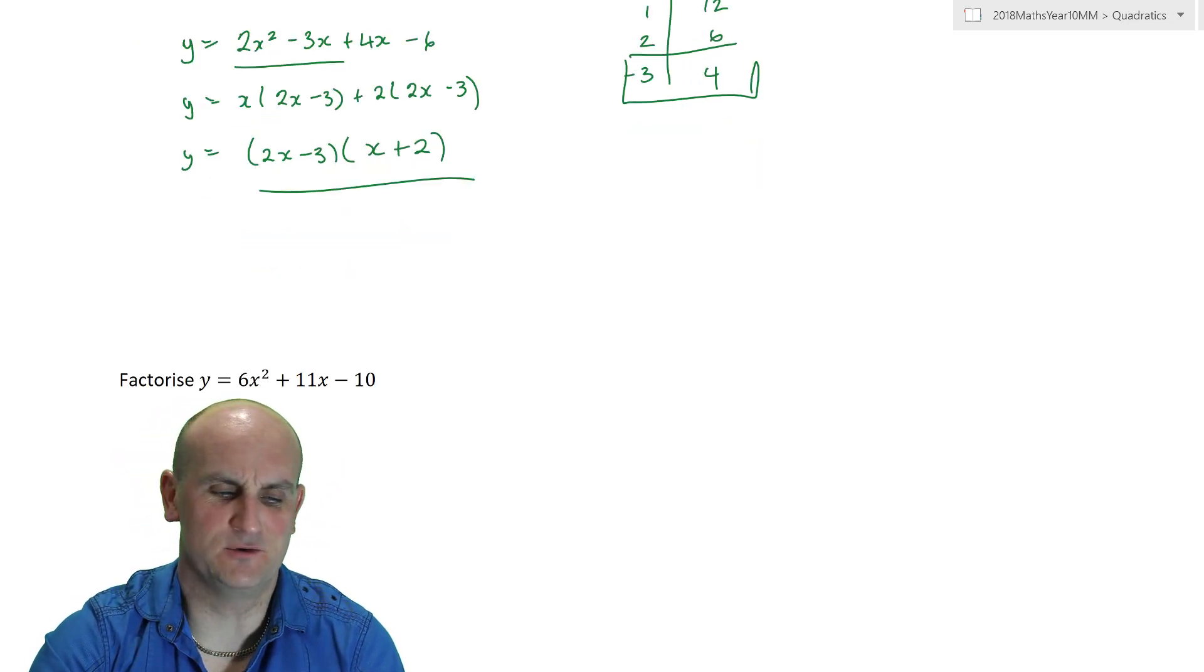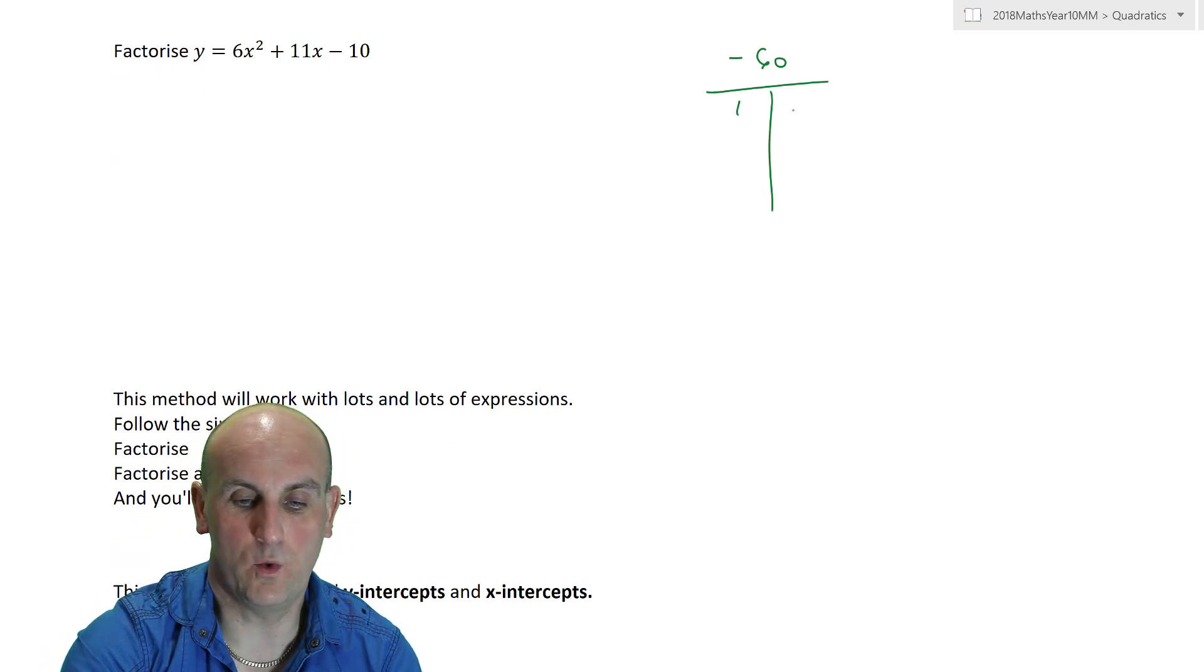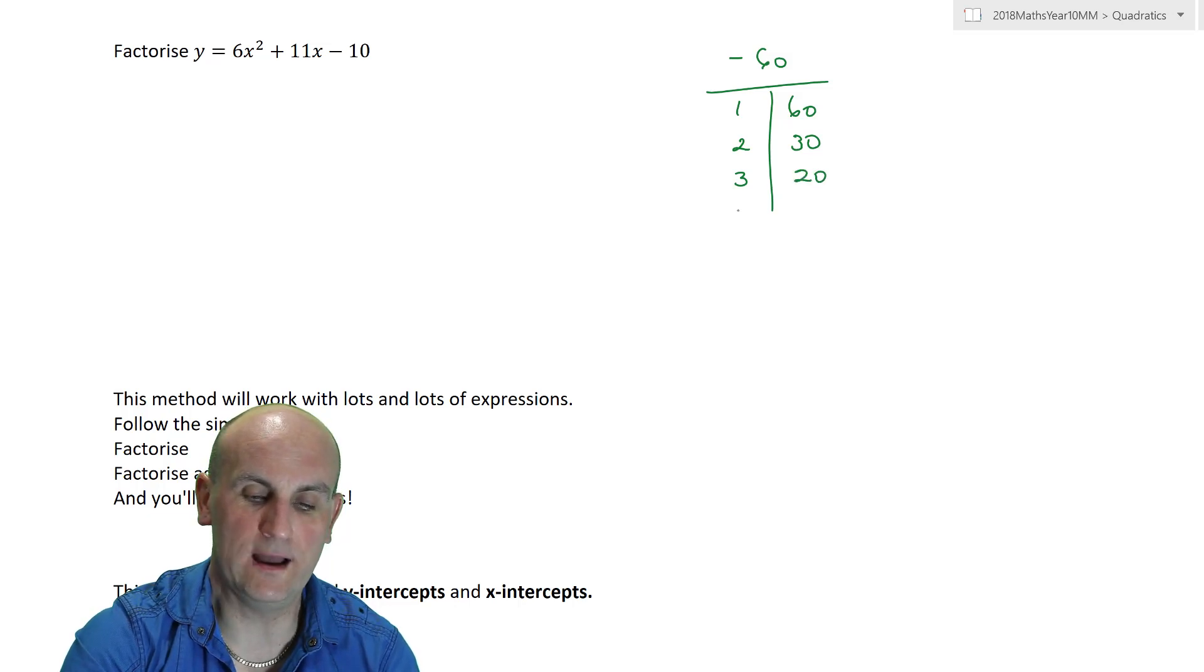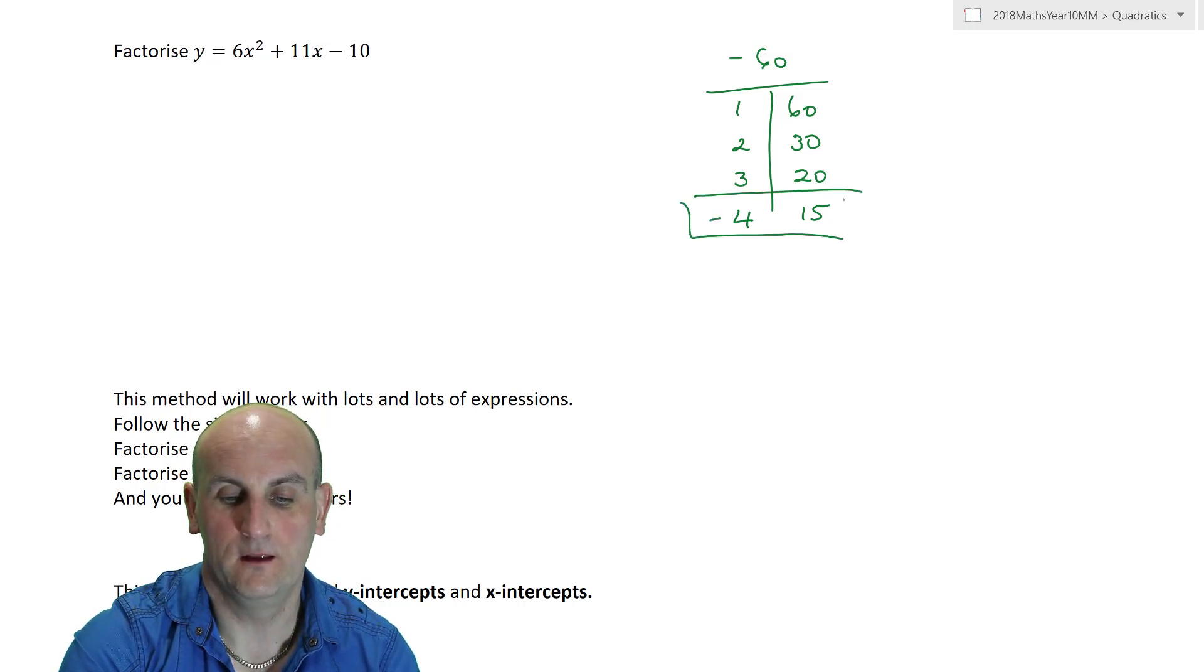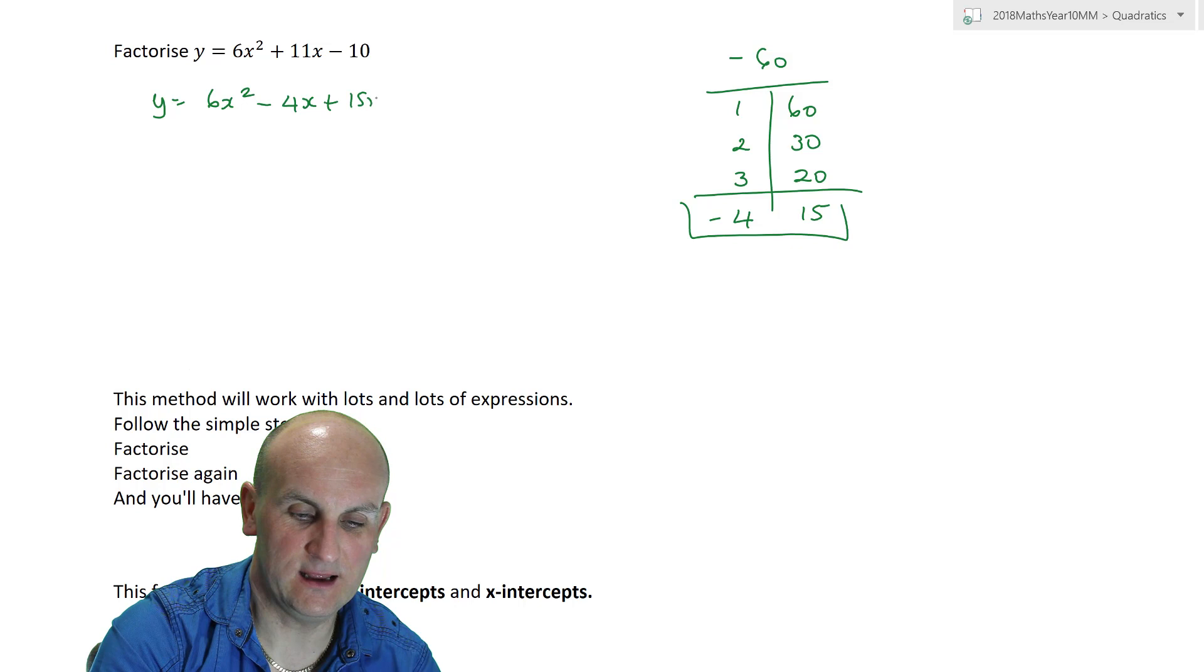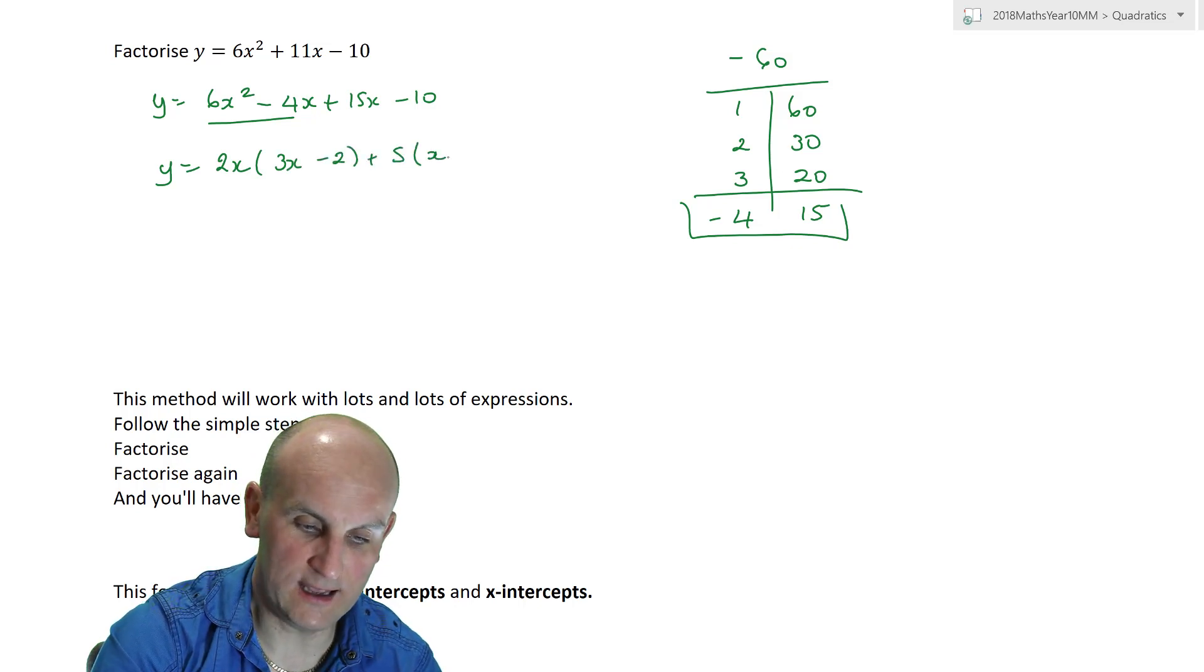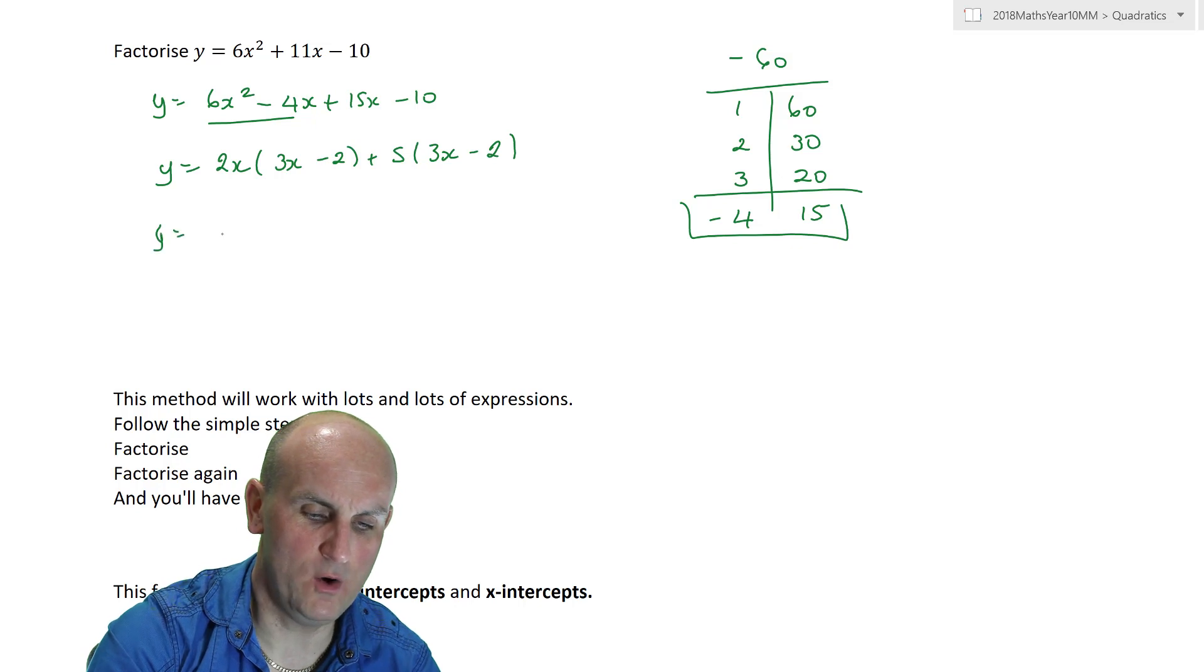Again, if you can do the cross method, that's awesome. This is just an alternative. And, here is my final example with minus 60. So, 1 and 60 and 2 and 30 and 3 and 20 and 4 and 15. There we go. That's got a difference of 11 if I make this minus 4. So, y is equal to 6x squared minus 4x plus 15x minus 10. Now, factorizing by grouping. Take out 2x gives me 3x minus 2. Take out plus 5 gives me, oh, x. No, it doesn't. Try again. It's 3x minus 2. And, lo and behold, once again, we get 3x minus 2 and 2x plus 5.